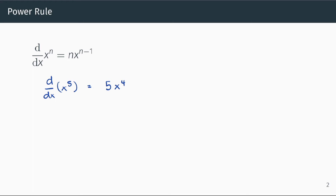Let's do another example. Let's say the derivative of x to the power of 10 with respect to x. Similarly, we bring the power to the front, so bring 10 to the front, then subtract 1 from the power. So from x to the power of 10 we end up with x to the power of 9. So the derivative of x to the power of 10 is 10 times x to the power of 9.